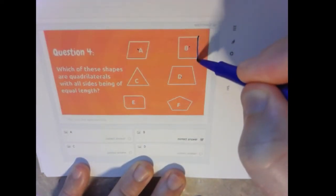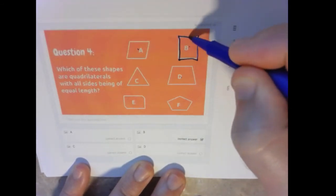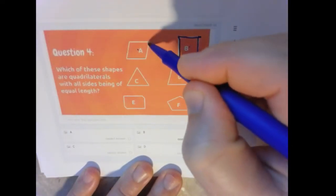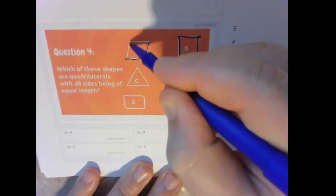And I would say that would be, B definitely has what looks like equal sides. And A, A looks like those sides are about equal as well.